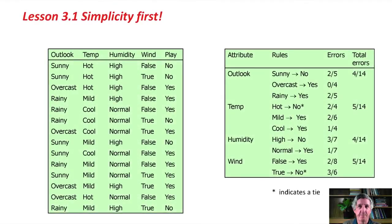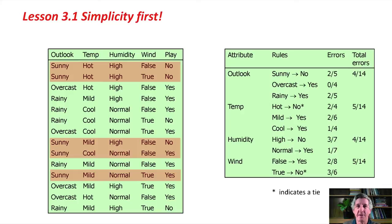Here's the weather data again. What 1R does is look at each attribute in turn — outlook, temperature, humidity, and wind — and form rules based on that. For outlook, there are three possible values: sunny, overcast, and rainy. Out of the five sunny instances, two are yes and three are no. So we choose the rule: if it's sunny, predict no, and we get two errors out of five.